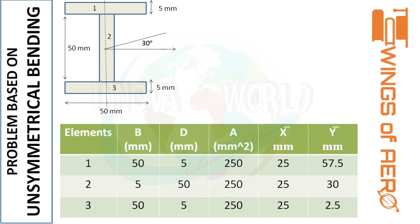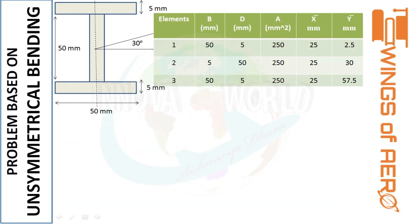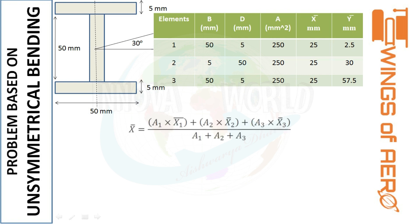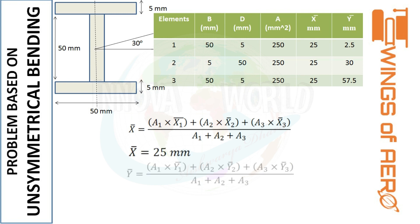Now we find the overall centroid. Using the x-bar and y-bar formulas, we substitute all values for each element and calculate the centroid of the entire I-section.